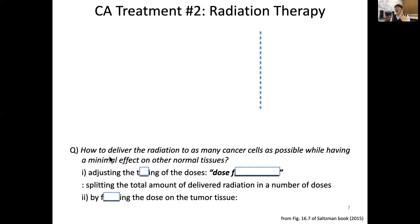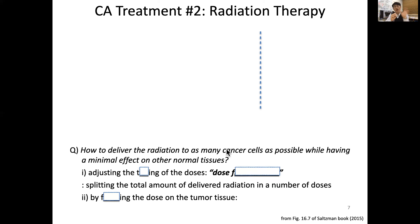How do we deliver radiation to as many cancer cells as possible while having a minimal effect on other normal cells? The problem is this radiation — usually a strong, high-energy photon — will penetrate and pass straight through our tissue. Even if the tumor is in the middle of the body, the radiation has to go through some part of normal tissue. So the important question is: how do we deliver radiation mostly to cancer cells while minimizing exposure of normal cells to this radiation?